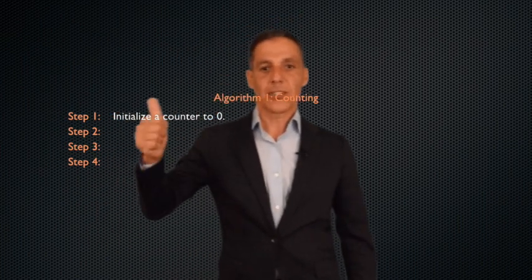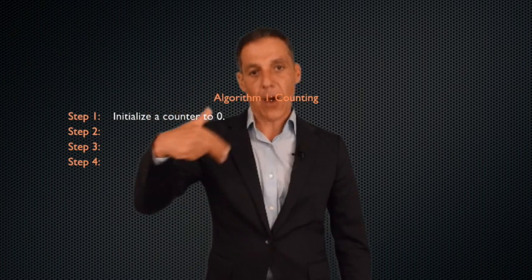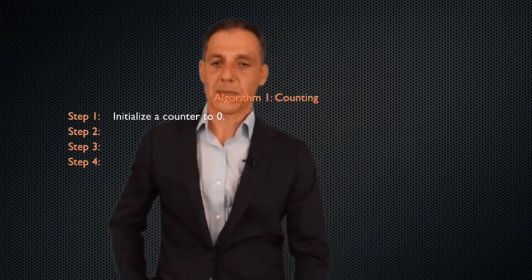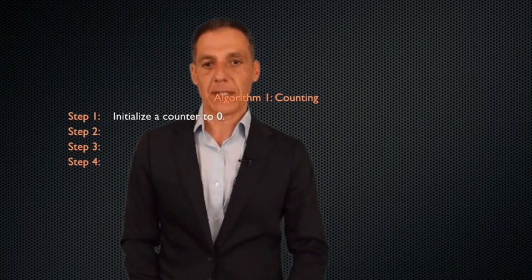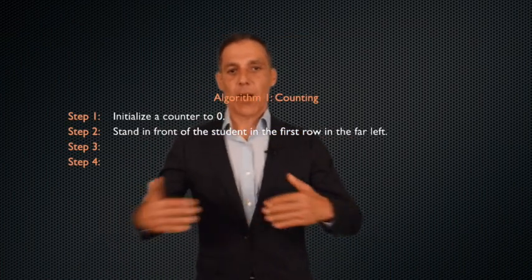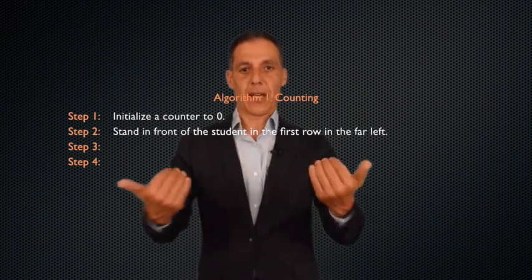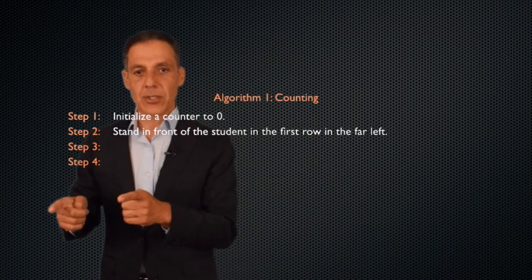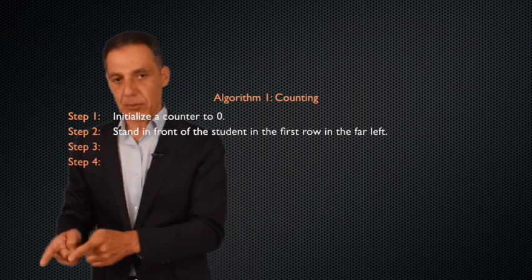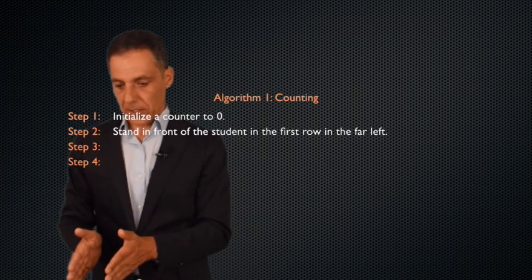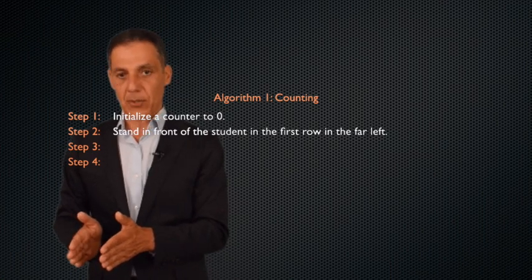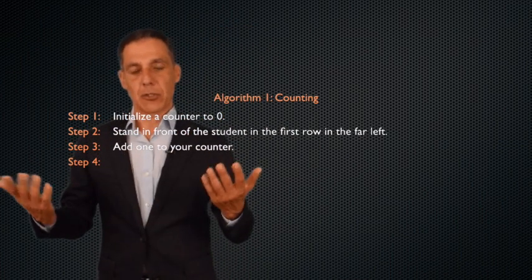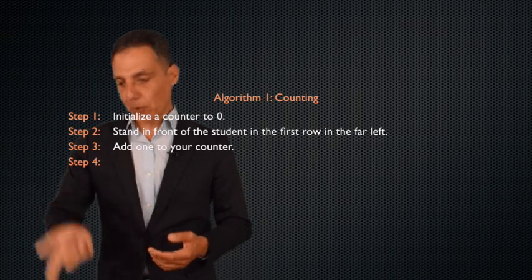Step one, initialize a counter to zero. That counter is going to be counting students in the class. By the time I get to the end, it'll count the total number of people sitting in the class. So precise, simple, nothing complicated there. Step two, imagine we're in a classroom. I'm in the front facing you, you are sitting down facing me, and there's row after row of chairs. Stand in front of the student in the first row in the far left. That's a precise and unambiguous and simple step. And add one to your counter. Again, precise, simple, easy to do. I just counted that student.